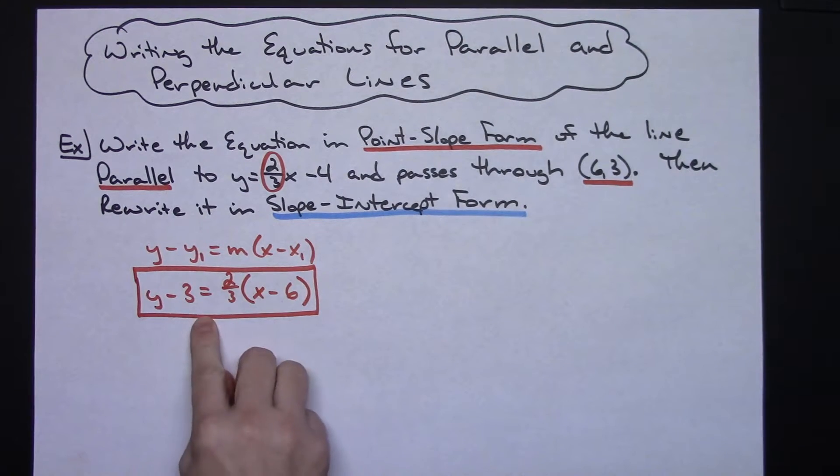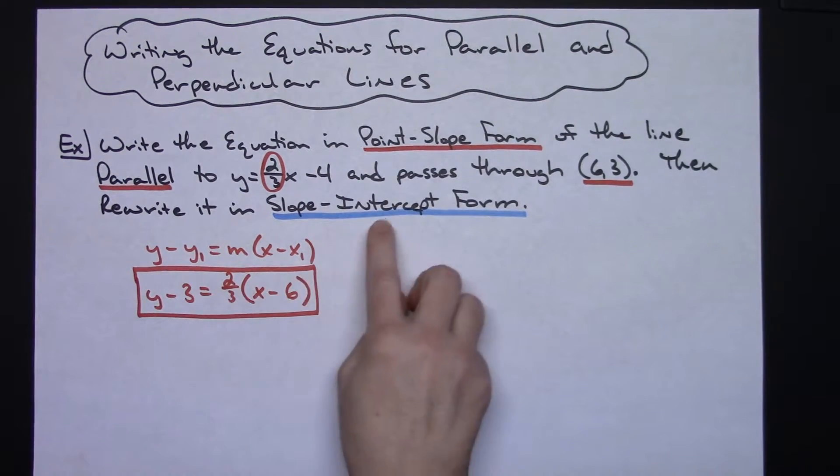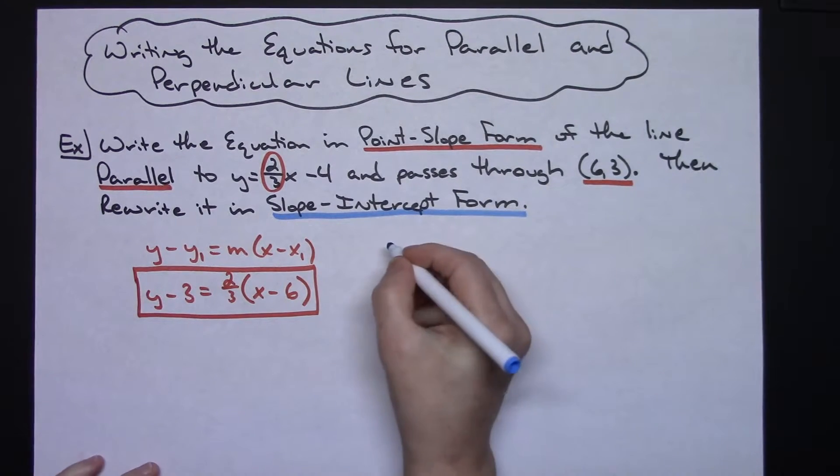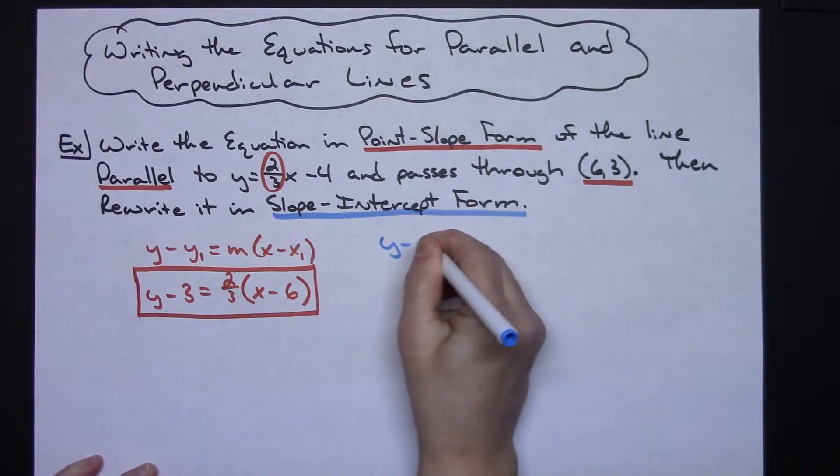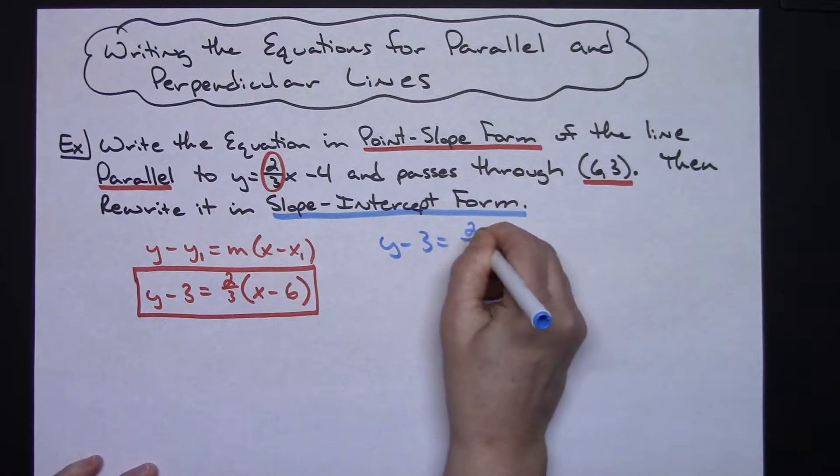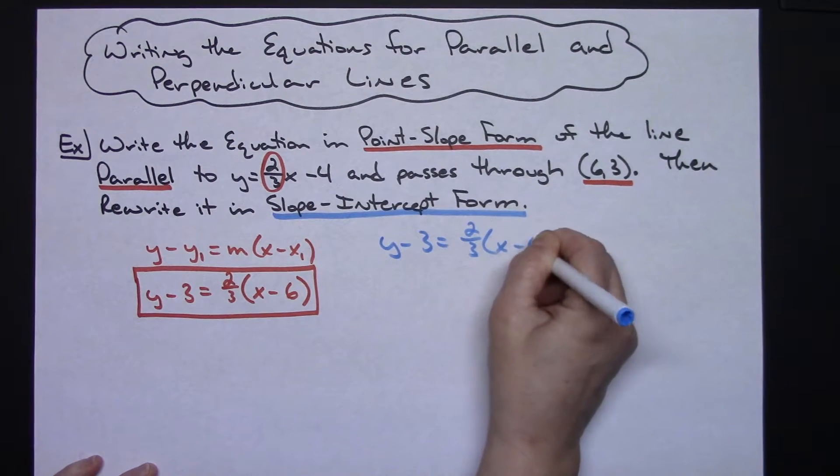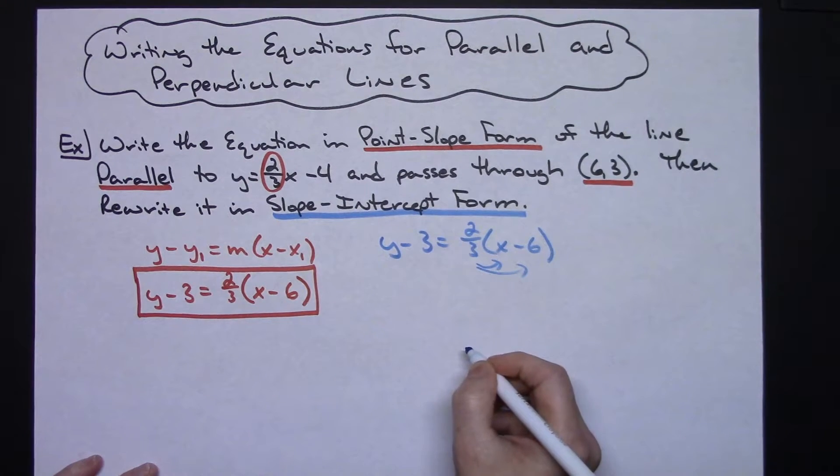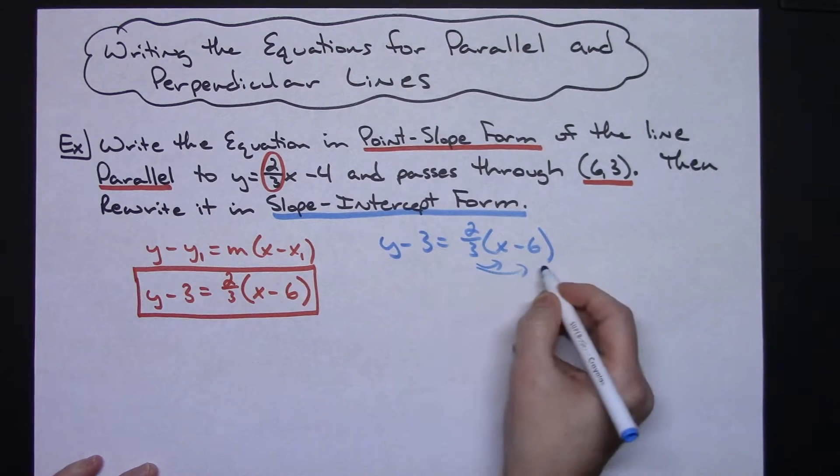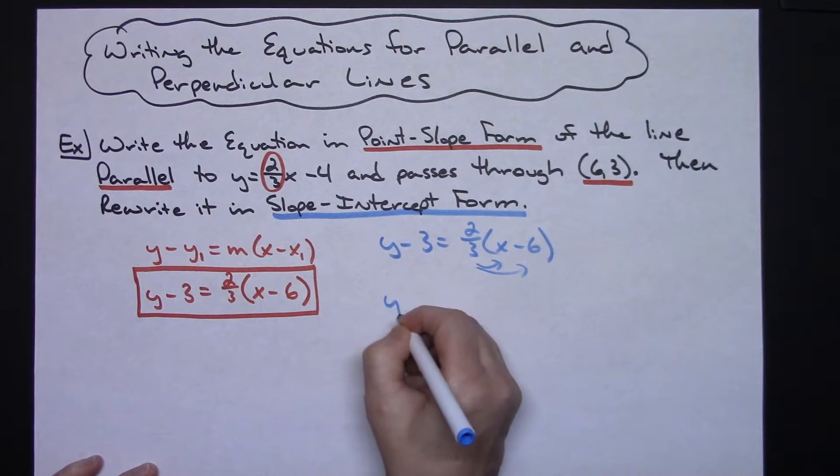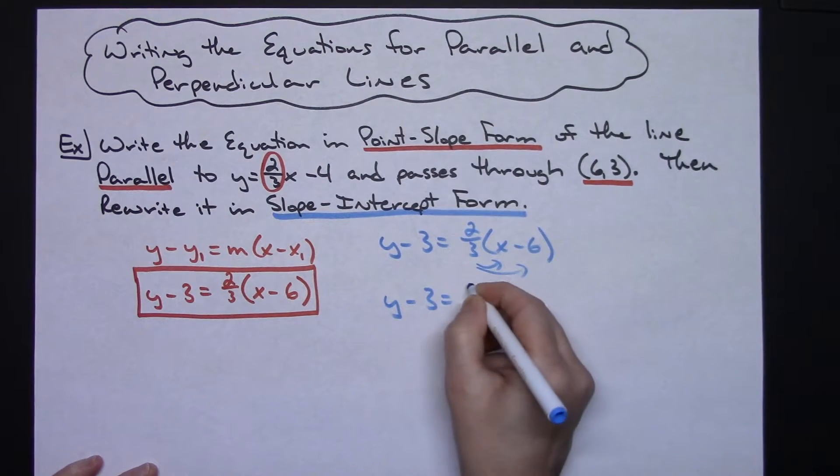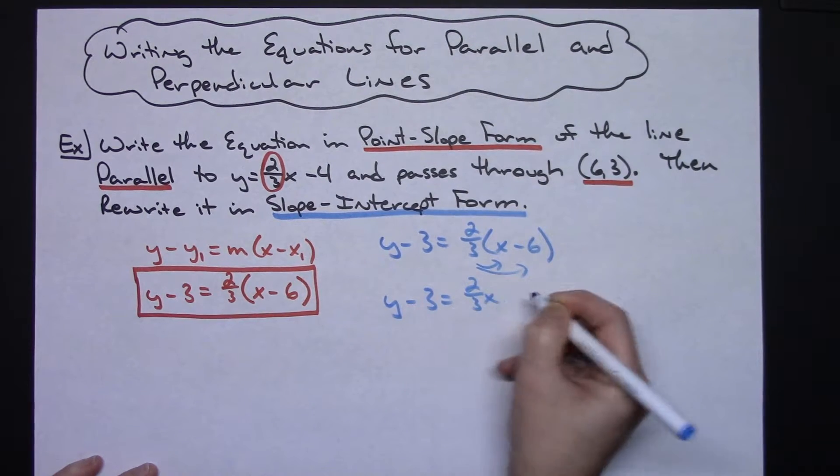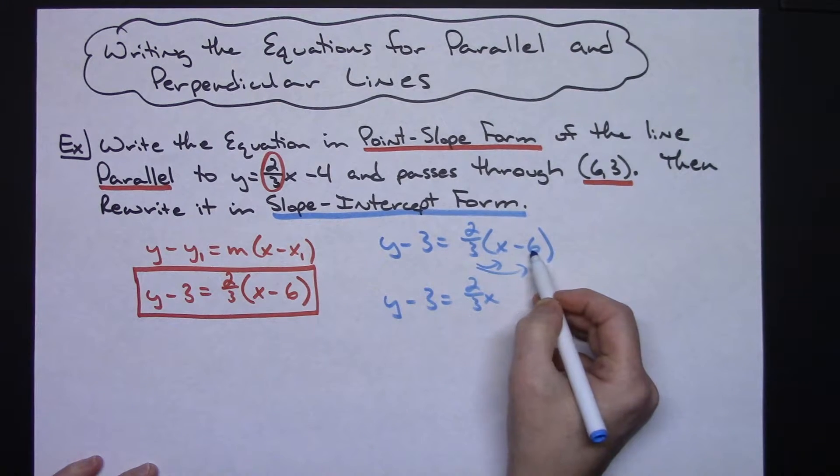Okay, now I need to then take this and rewrite it into slope-intercept form. So I'm going to start with y minus 3 equals two-thirds x minus 6. So we probably should distribute that two-thirds to both things inside there. So I'll have a y minus 3 equals a two-thirds x. Now two-thirds times 6.